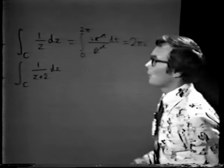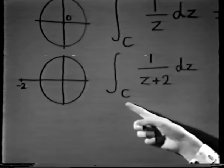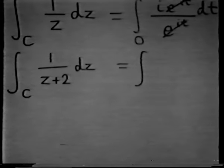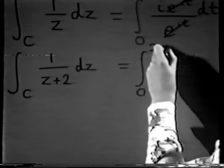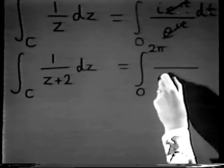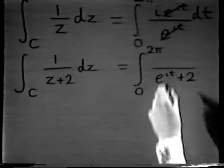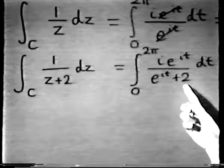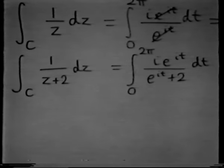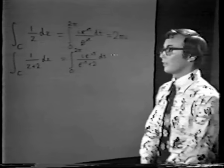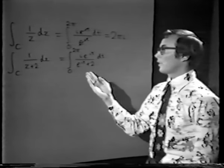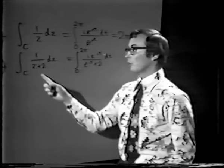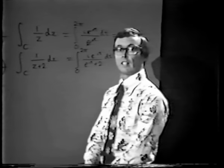Let's now go on to the second problem: the integral of 1/(z+2) around the unit circle. We might try parametrizing as before. We get the integral from 0 to 2π of ie^(it)/(e^(it)+2) dt. But this time there's a 2 in the denominator, so we don't get cancellation and we've run into problems. One option is to split the integral into real and imaginary parts, but then instead of one complicated integral we have two. It's more elegant to argue directly from the original integral involving the complex variable z.